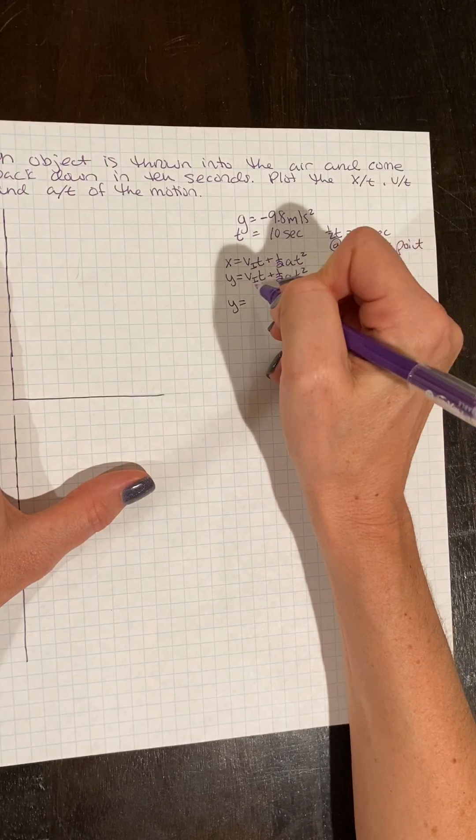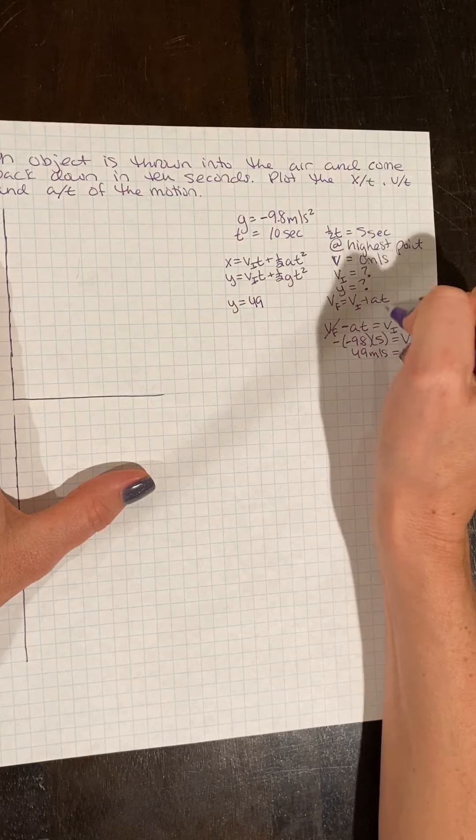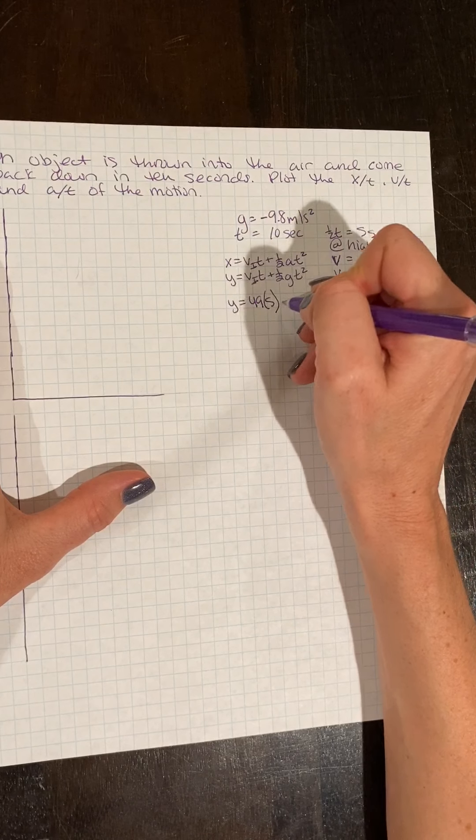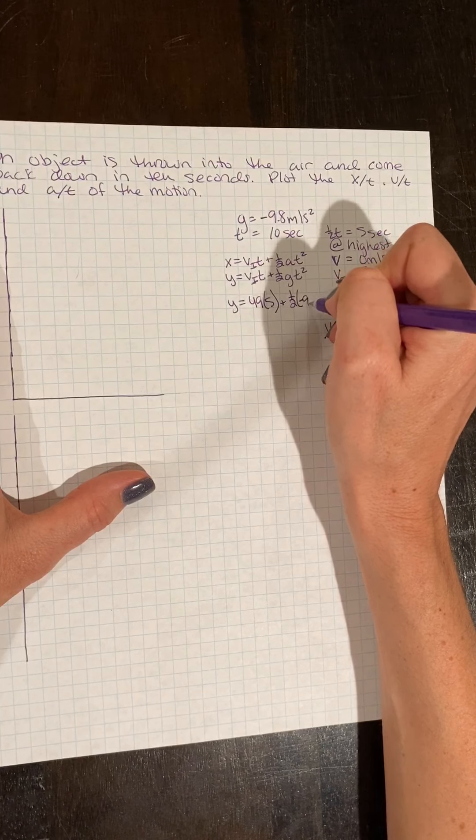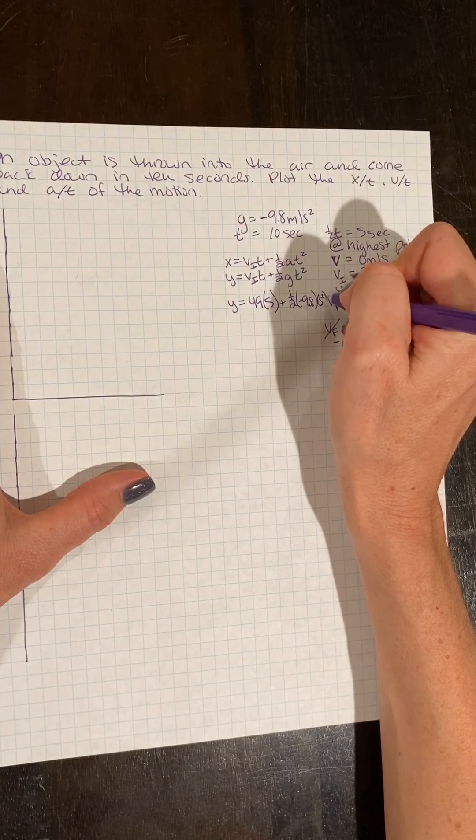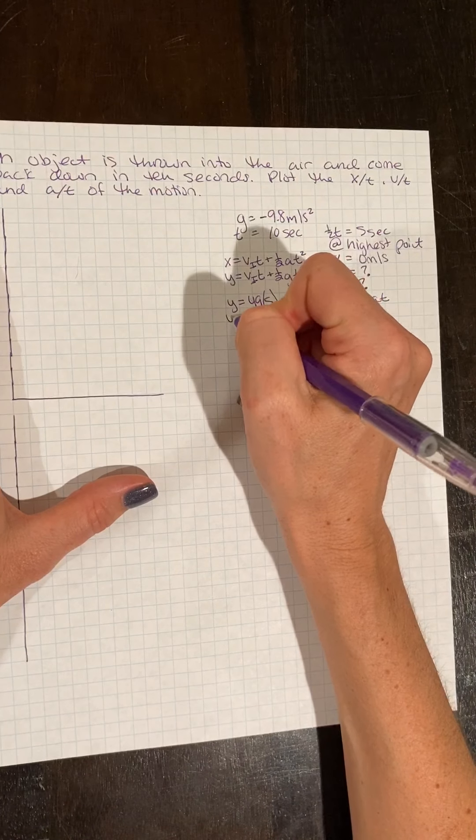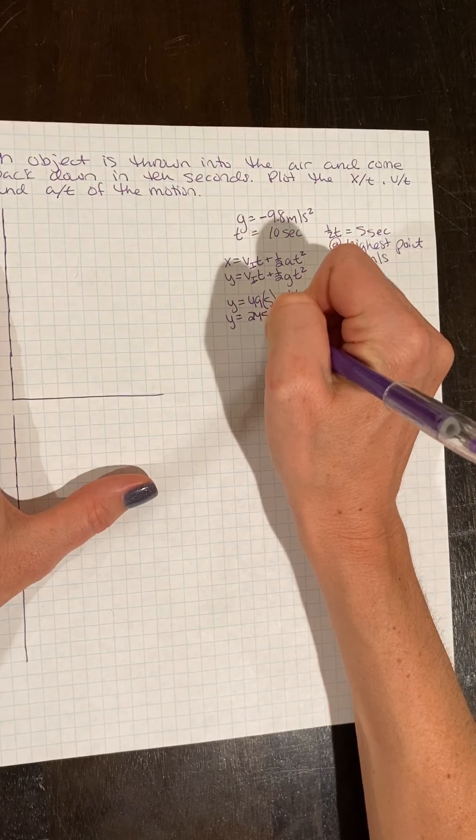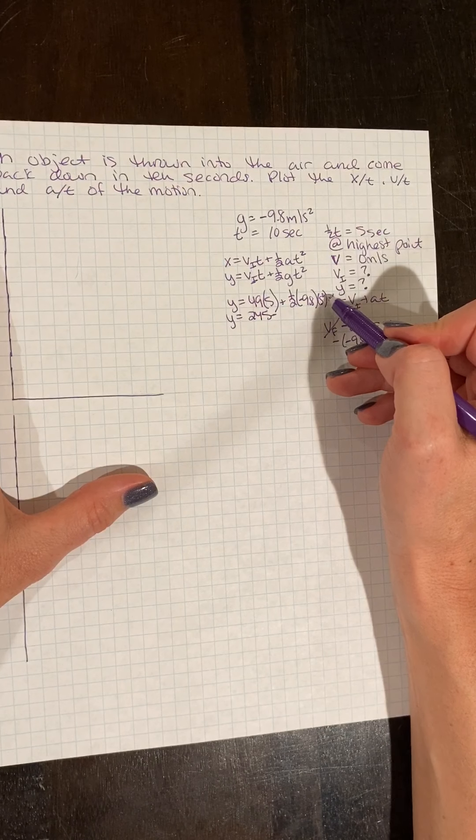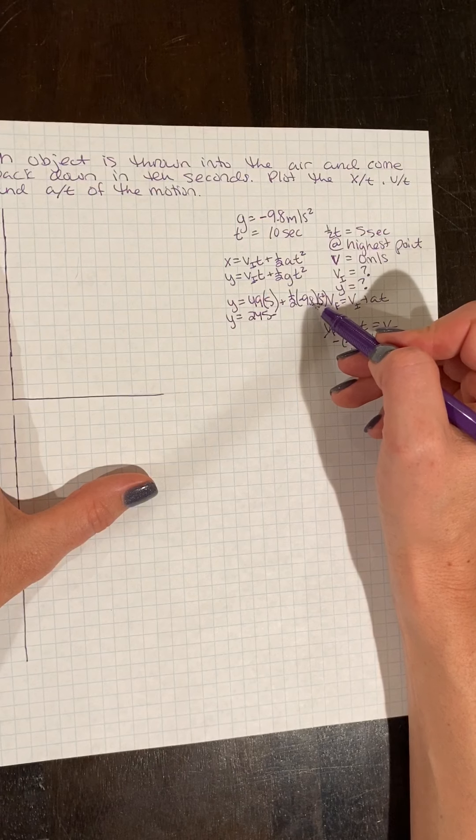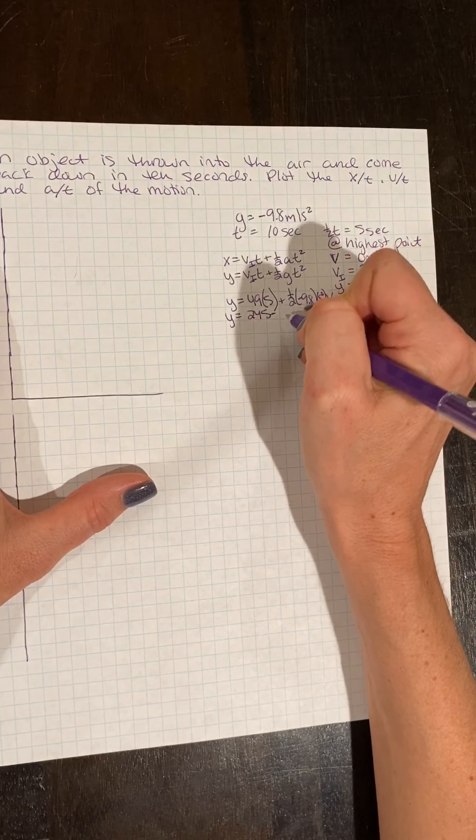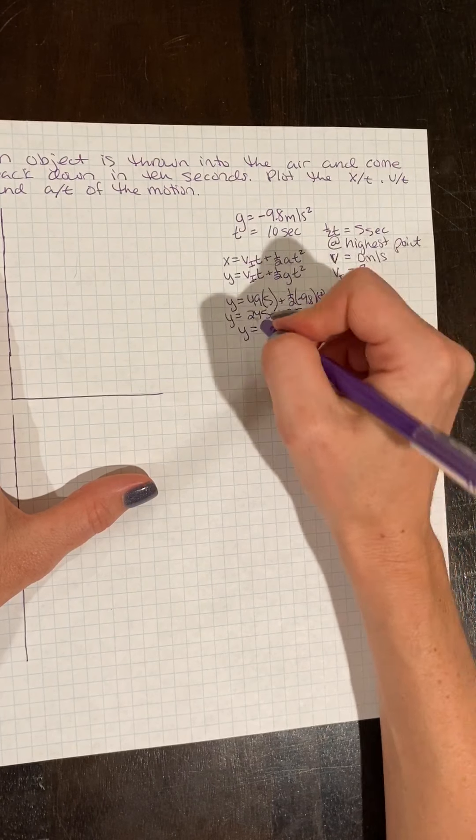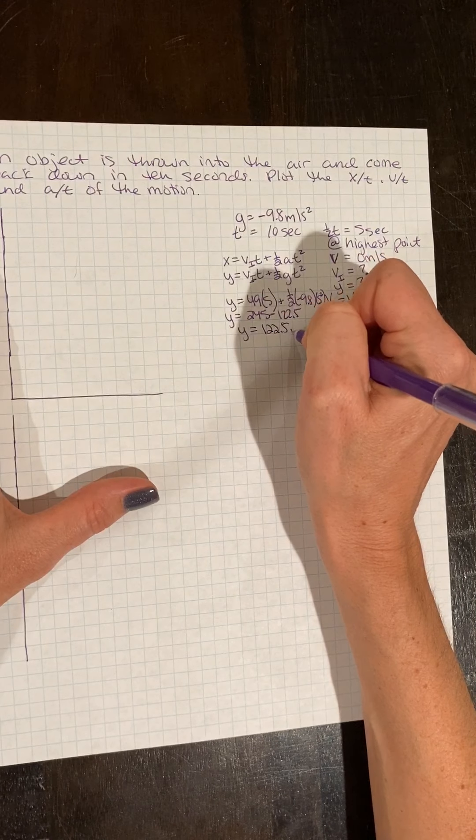Our highest point is going to be when we're halfway through. So we know our initial velocity was 49, we just calculated it. The time it takes to go half our flight is 5 seconds. Okay. So 49 times 5 gives me 245. And 25 is 5 squared times 9.8 times 0.5 gives me 122.5. So my highest point is going to be 122.5 meters.